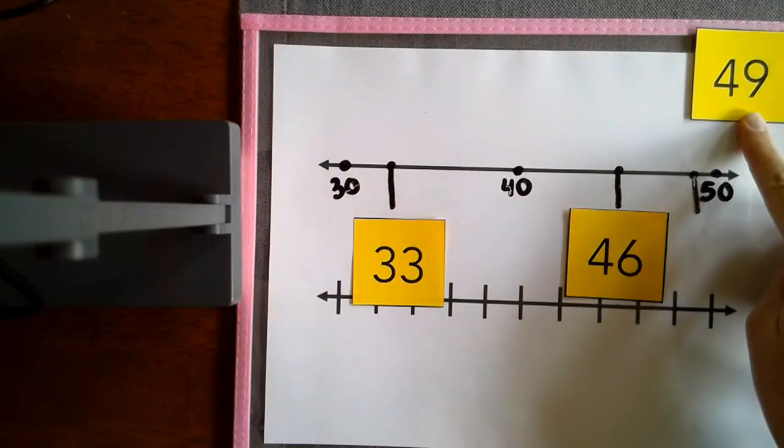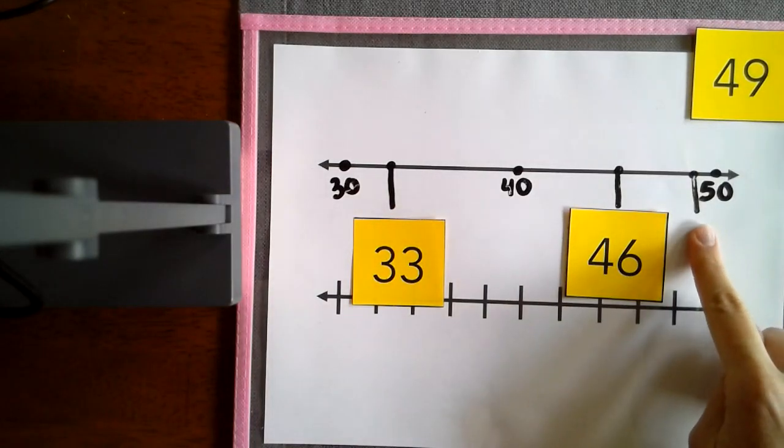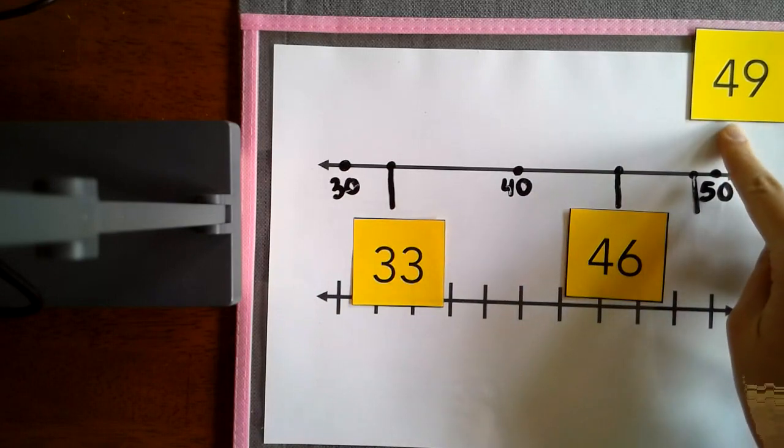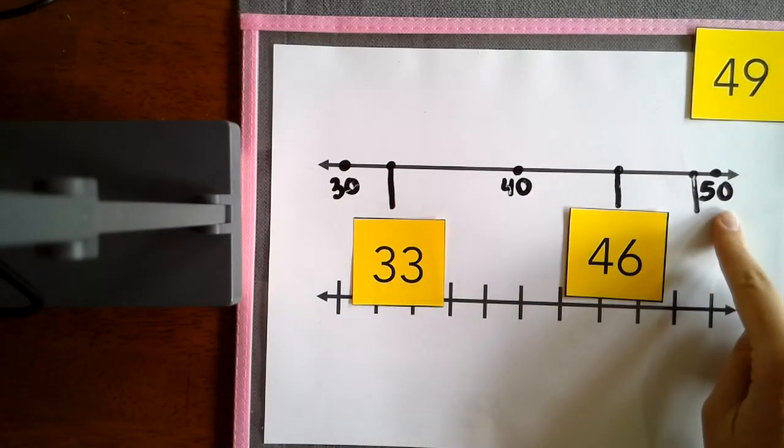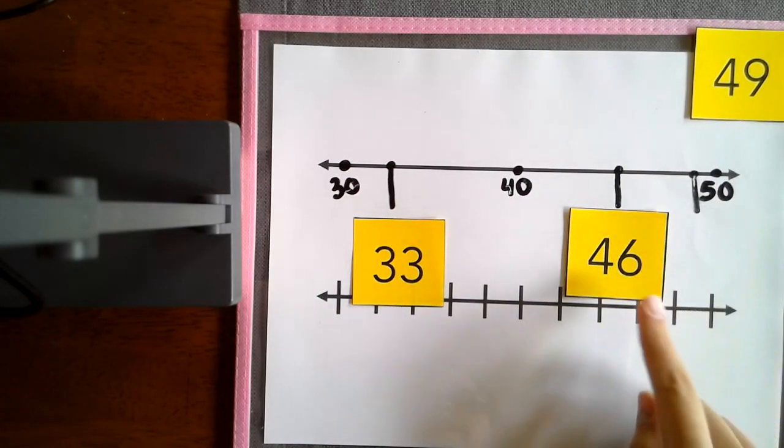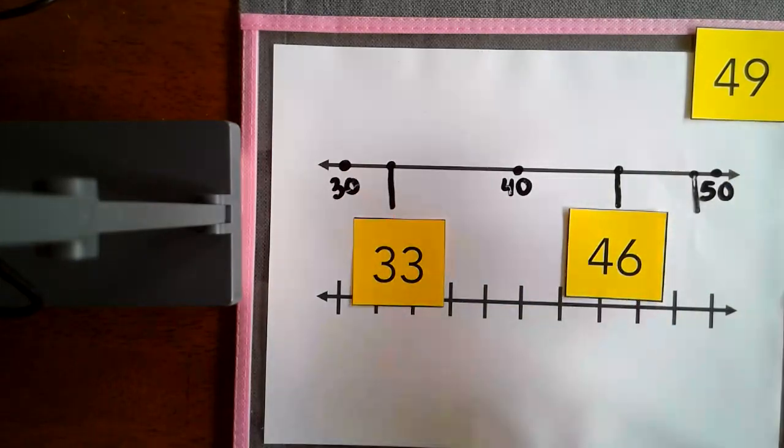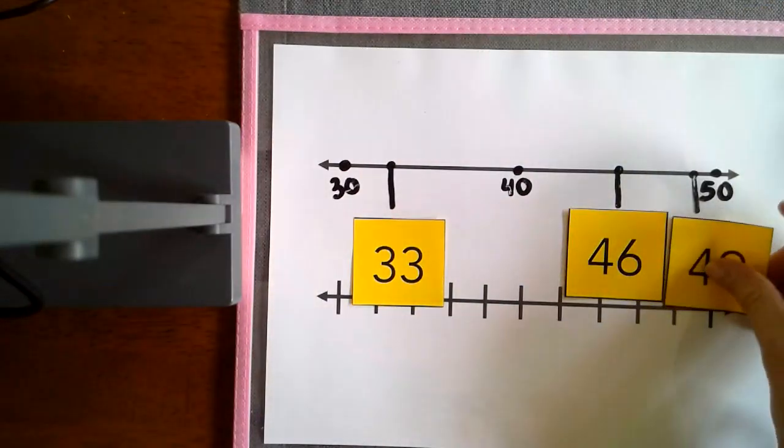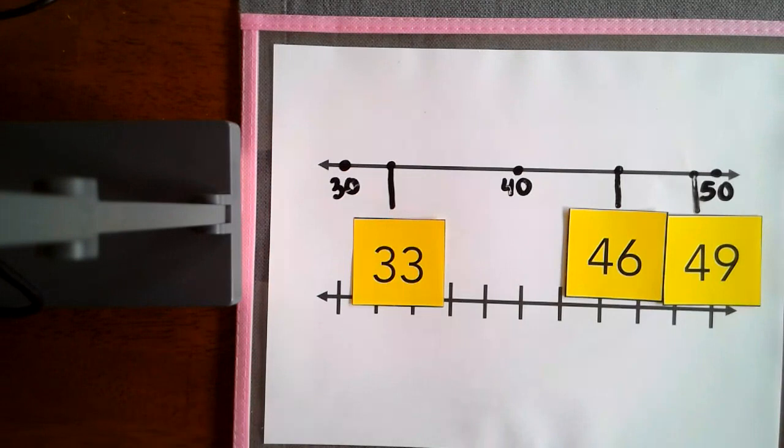Finally, we have 49. We have one spot left, but we have to think about it first. Is 49, would it make sense for it to be really close to 50? Yeah, because 49 is bigger than 46, and 49 is only one away from 50.